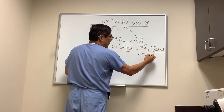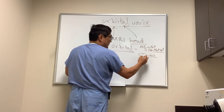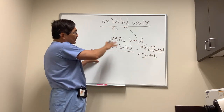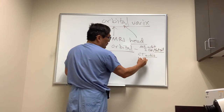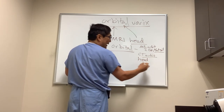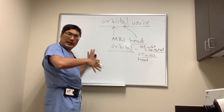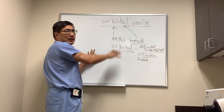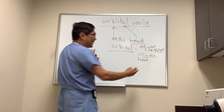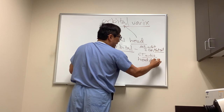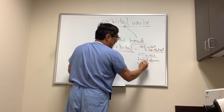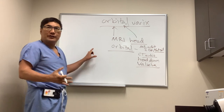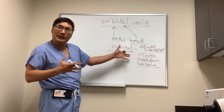For CT, again with contrast and without contrast. The advantage of CT in patients with orbital varices is we can do maneuvers like the head-down position or the Valsalva during the CT scan, which would be very difficult to do during an MRI scan. The head-down position and Valsalva will increase the venous component of the orbital varices and make the lesion more apparent.